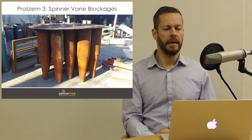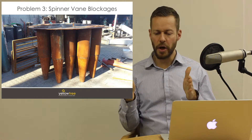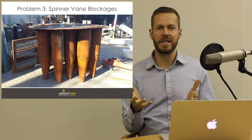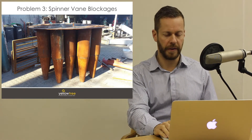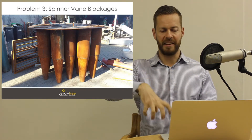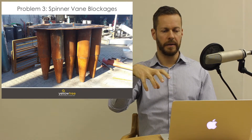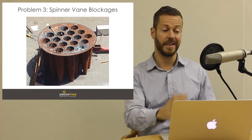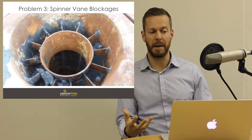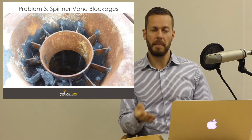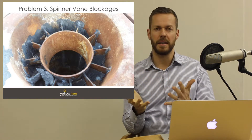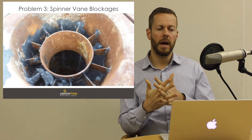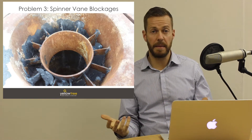Problem number three is blocked spinner vanes. Gas flowing into each cyclone must pass through spinner vanes that start the spiralling motion — but what happens if those spinner vanes get blocked? This photograph shows individual cyclones lifted with a crane out of the body of the multicyclone. Looking at the tops, we can see the spinner vanes, and on this particular multicyclone they have become blocked with particulate matter. This typically happens when the manufacturer spaces the spinner vanes very close together, which is common in modern multicyclones, meaning they need to be cleaned very often.